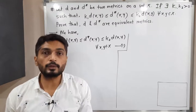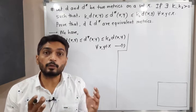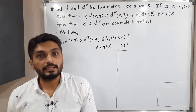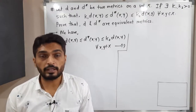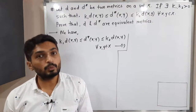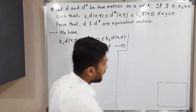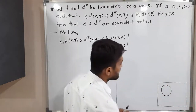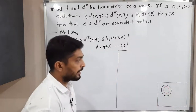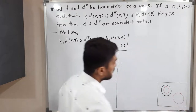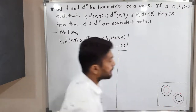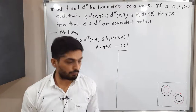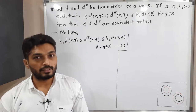Our target is to prove that d and d* are equivalent metrics. There are different ways to prove two metrics are equivalent. One way follows the definition: the family of d-open sets is the same as the family of d*-open sets. Another way: if for any d-open ball there exists a d*-open ball that is a subset with the same center, and vice versa, then the two metrics are equivalent. We will follow this second method.